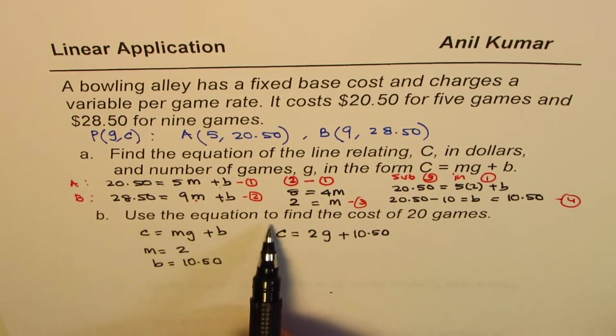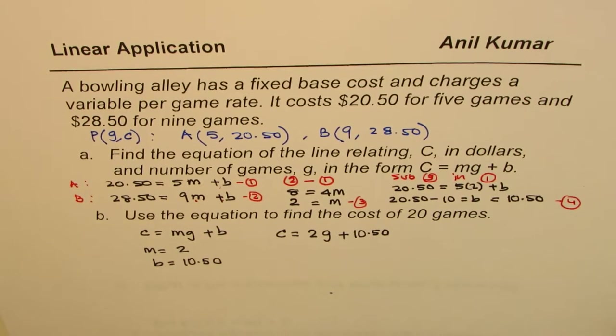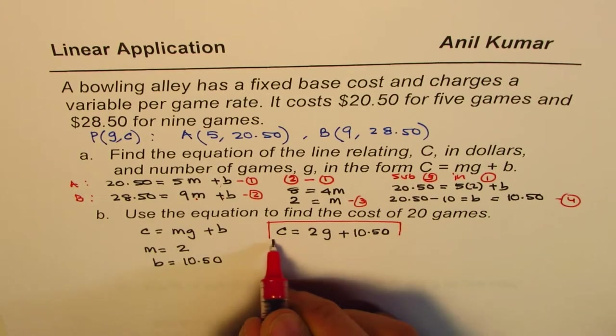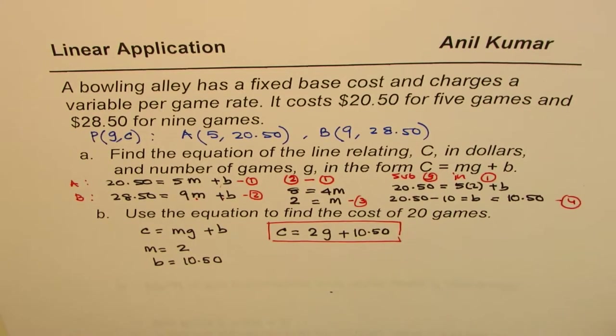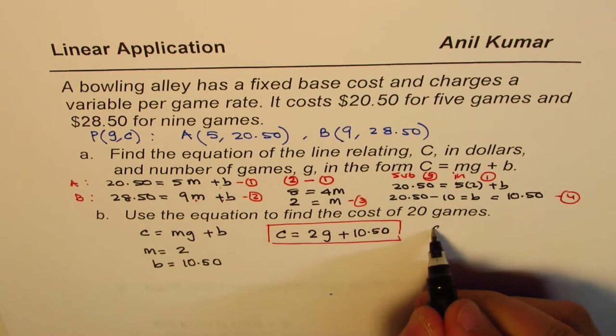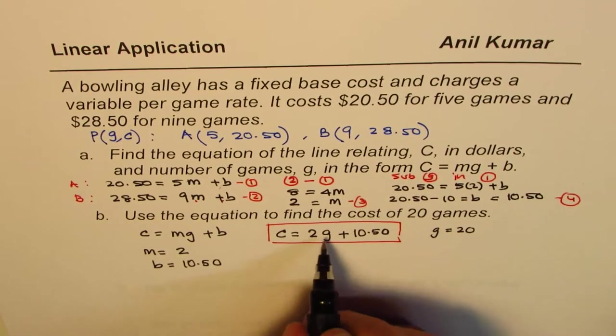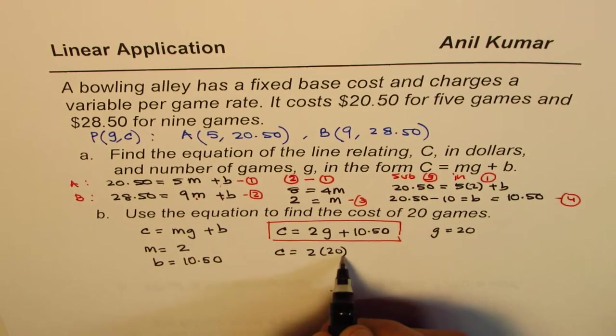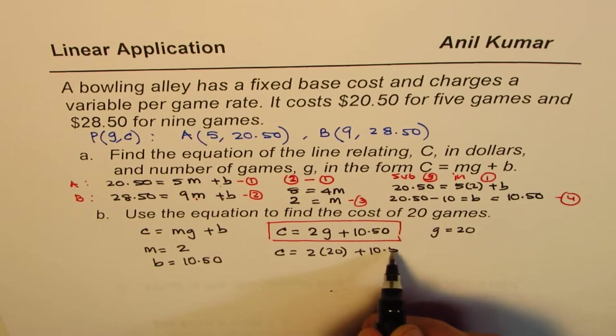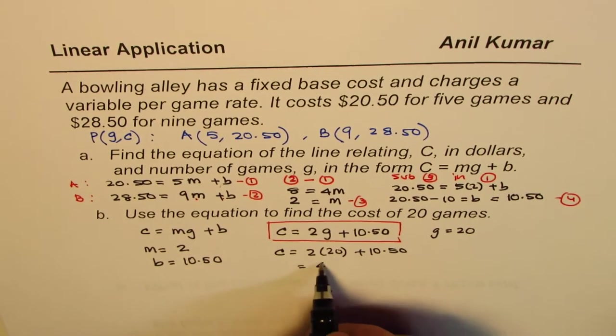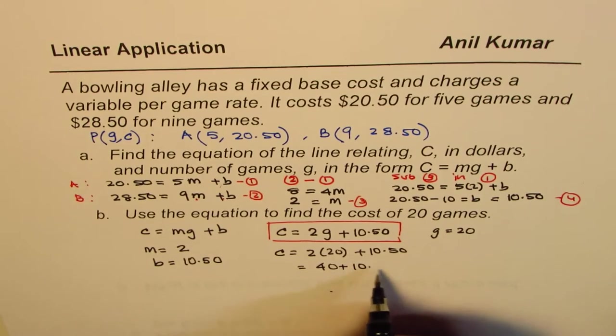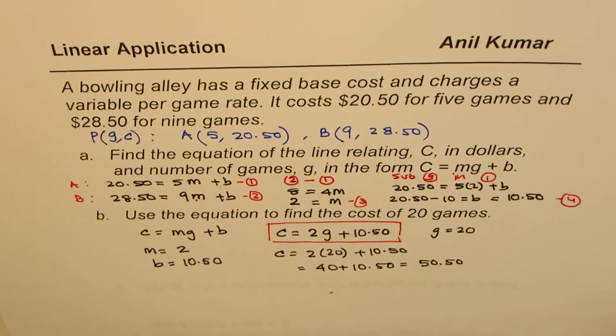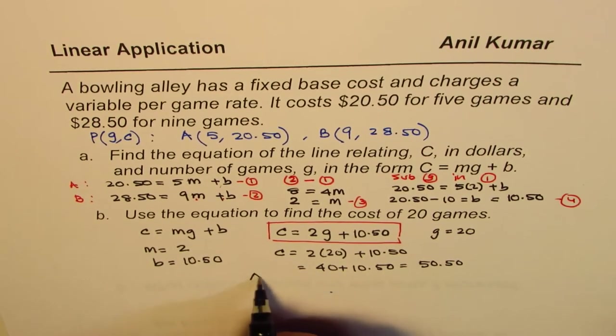Now, part B is: use the equation to find cost for 20 games. So, that's the equation for us. To find the cost for 20 games, we know G equals 20. So, G equals 20. So, substitute G as 20. Cost will be 2 times 20, plus 10.50, which is 40 plus 10.50, and that is $50.50.